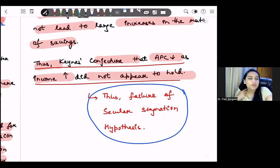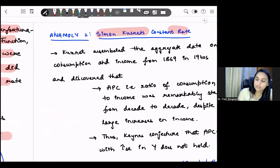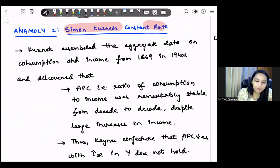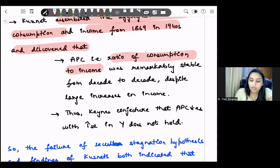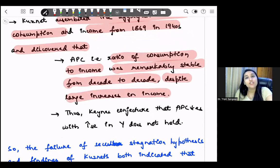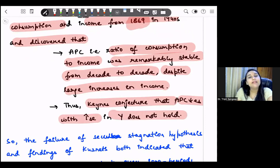Next anomaly is Simon Kuznets constant rate. So Simon Kuznets was an economist. He also analyzed the data. So he assembled the aggregate data on consumption and income from 1869 to 1940s and discovered that APC, which is the ratio of consumption to income, was remarkably stable from decade to decade. That means there were not many changes in it. Despite the fact that income had a lot of fluctuations, income was increasing a lot. Remember 1869, this was the period when we were moving towards the industrial revolution. So Keynes conjecture that APC reduces with increase in income does not hold in the long term period and in the long time period according to Simon Kuznets, APC will be constant.